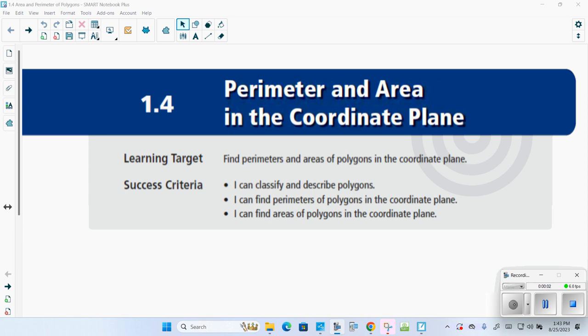Hi, welcome back to Honors Geometry. Today we're going to talk about section 1.4, Perimeter and Area. But before we get into that, let's do a couple of review type questions.